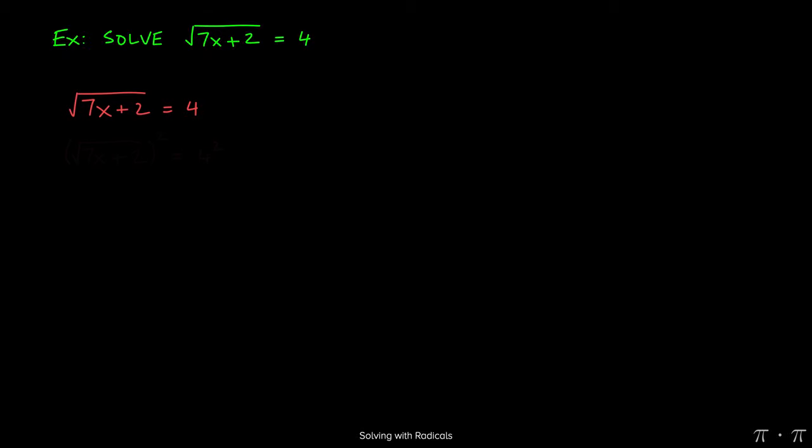We start by recognizing that in order to get rid of the square root on the left-hand side, we need to square both sides. So that's exactly what we do.